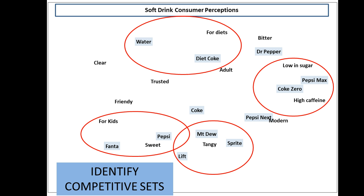The first thing we can use it for is to identify competitive sets by grouping the brands or products that are close together into sets. This allows us to see how the consumers see and classify the various brands.